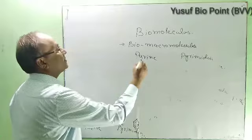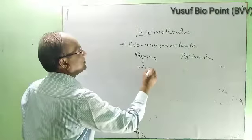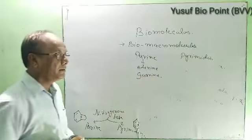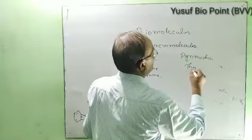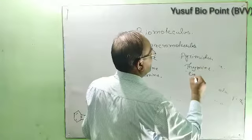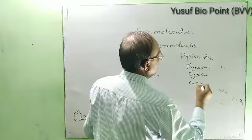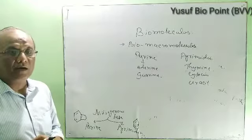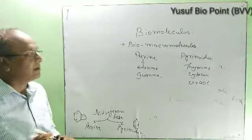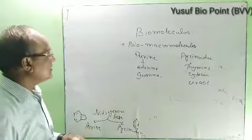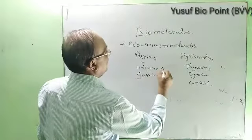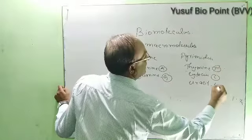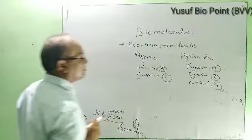In the purines, we have adenine and guanine. In the pyrimidines, we have thymine, cytosine, and uracil. These are the five bases of nucleic acid. Adenine is denoted by A, guanine by G, thymine by T, cytosine by C, and uracil by U. They are denoted by these alphabets.